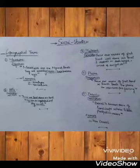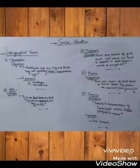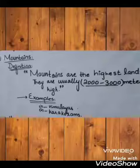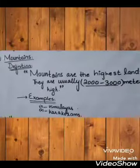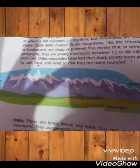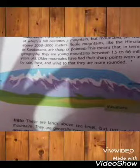Now we will discuss geographical terms. The following geographical terms will be discussed. First is mountains. Mountains are the highest lands — they are usually 2,000 to 3,000 meters high. Examples include the Himalayas and Karakoram.